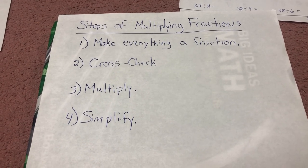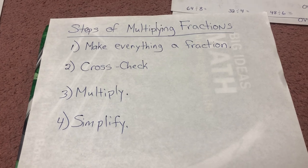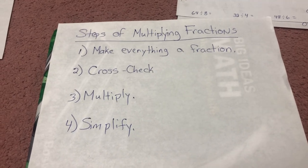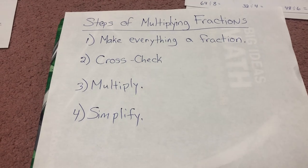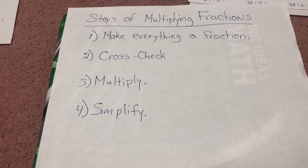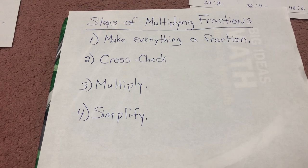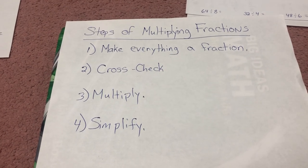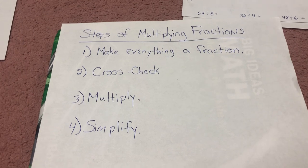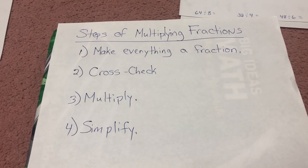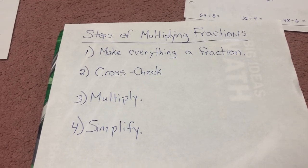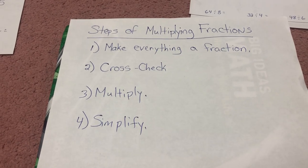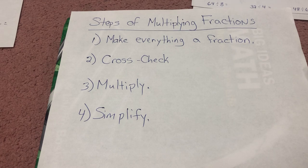These are the steps of multiplying fractions and we will recite these in class. Step one: make everything a fraction. Step two: cross-check. Step three: multiply. Step four: simplify. So once again — step one: make everything a fraction. Step two: cross-check. Step three: multiply. Step four: simplify. That is what we are getting into today.